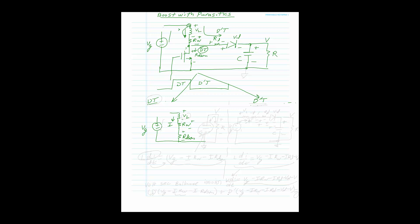During DT, the diode is reverse biased, so the output section has only the capacitor supplying the load. Unlike the buck converter — where the inductor is always present — here the capacitor alone must supply the full load current during DT. In high-current applications (10, 20, 30 amps), this is a significant consideration.